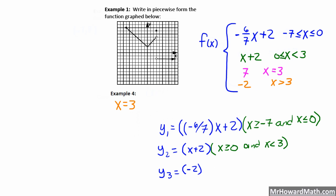So in y3, I put just negative 2 in parenthesis, y equals negative 2, the function itself. And then in its own set of parenthesis, I put the domain statement, x is greater than 3, close parenthesis, just like that.